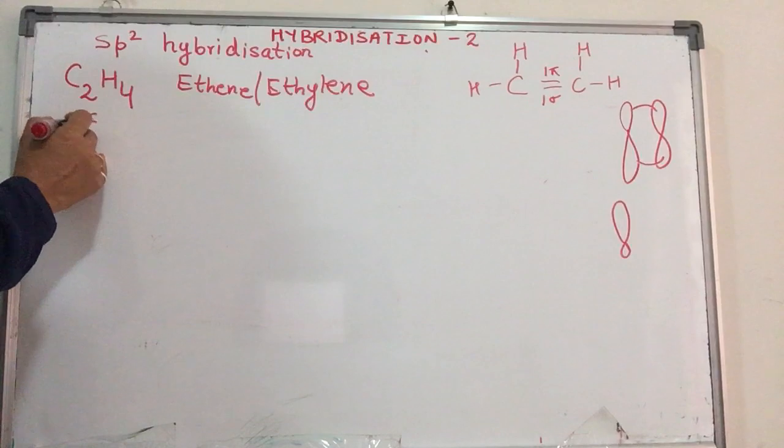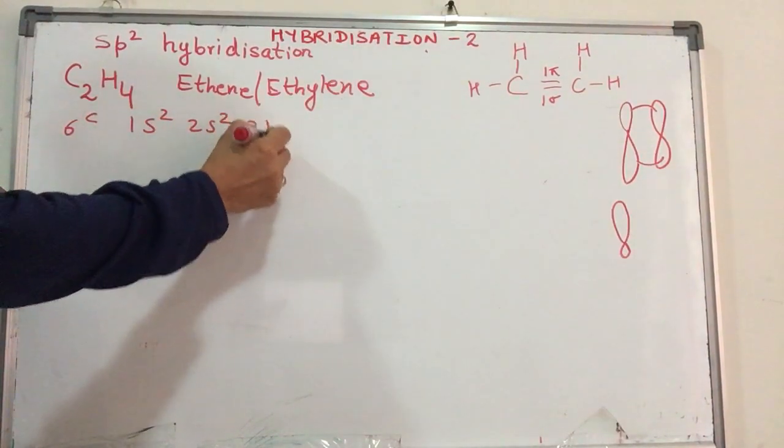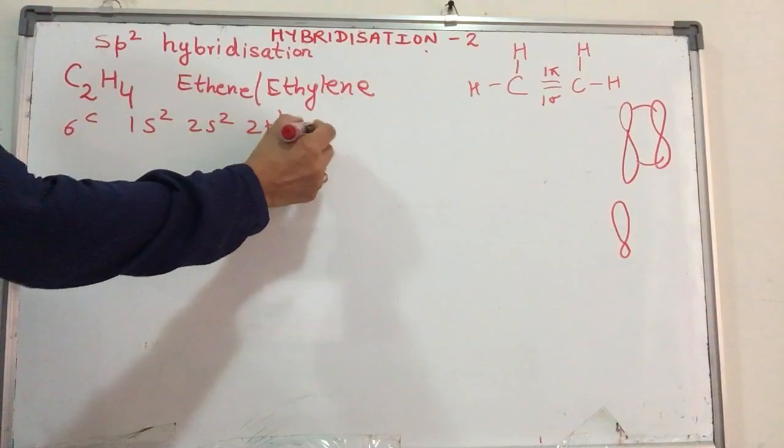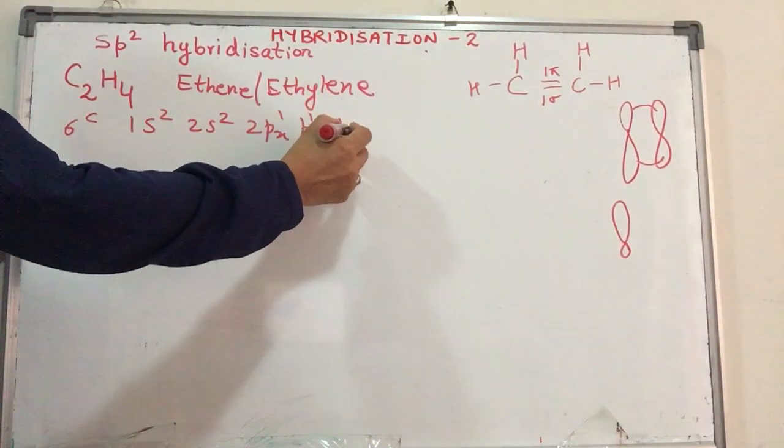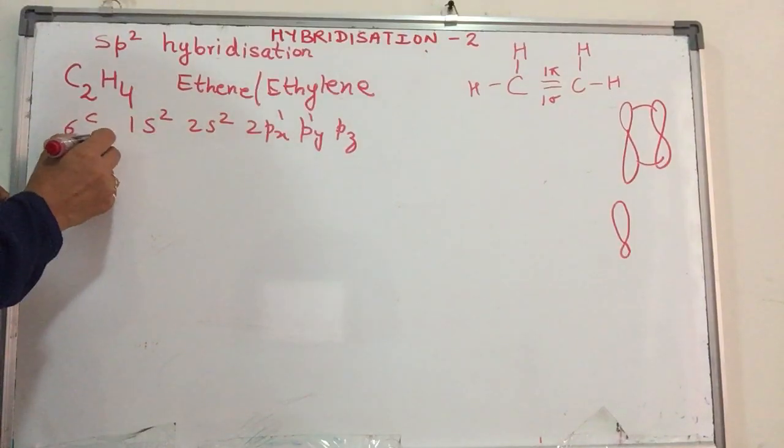Let's start with the electronic configuration. 1s2, 2s2, 2px1, y1 and z with no electrons.